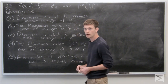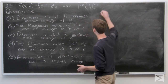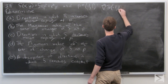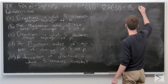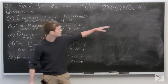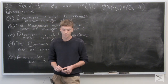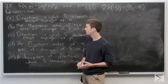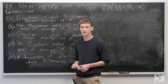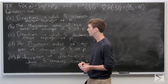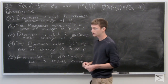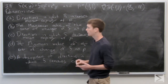We can recall from a previous problem that the gradient vector of f at (-1, 1) is the vector ⟨8, -11⟩. For part a, we want to find the direction in which f increases most rapidly at p. We know that the gradient vector tells us the direction in which f increases most rapidly, and we want it as a unit vector, so we'll normalize the gradient vector.